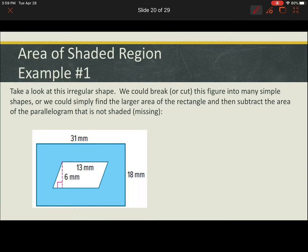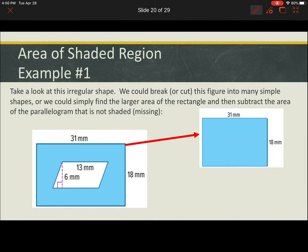Let's take a look at this irregular shape. We can break this up into many simple shapes, or we could take the area of the larger rectangle and then subtract the area of the parallelogram that's not shaded. In other words, it's missing.